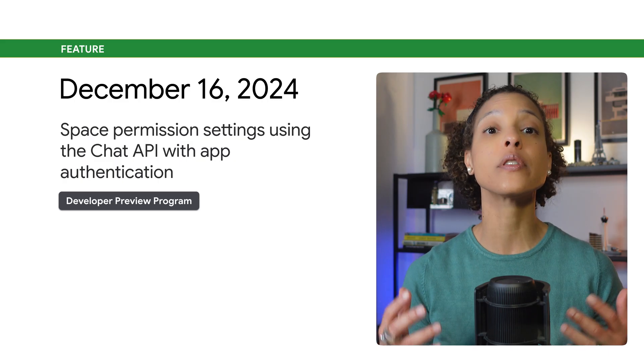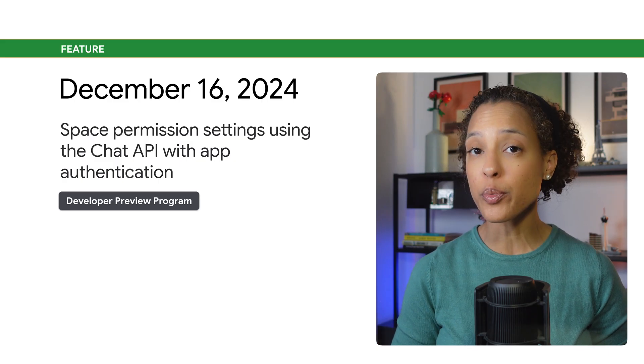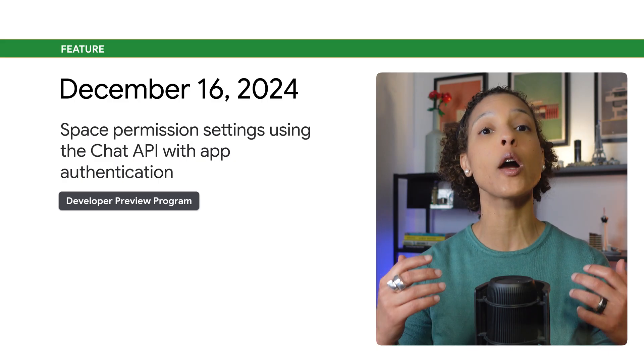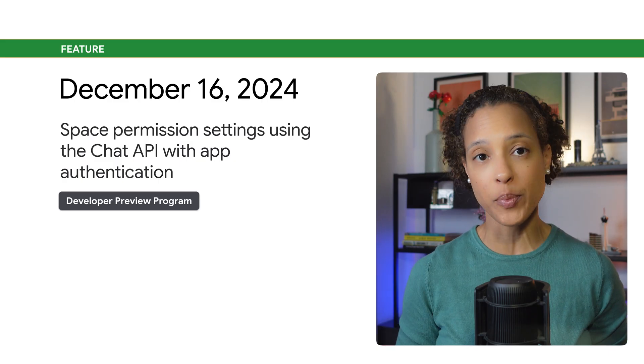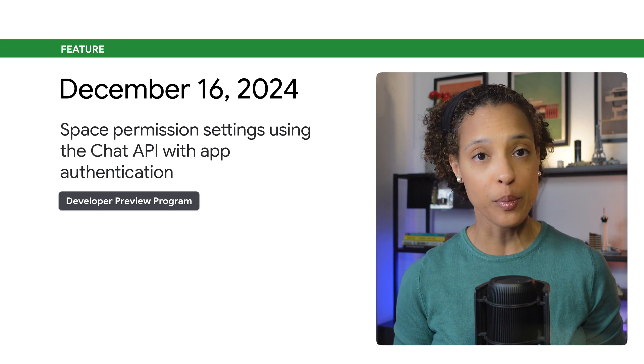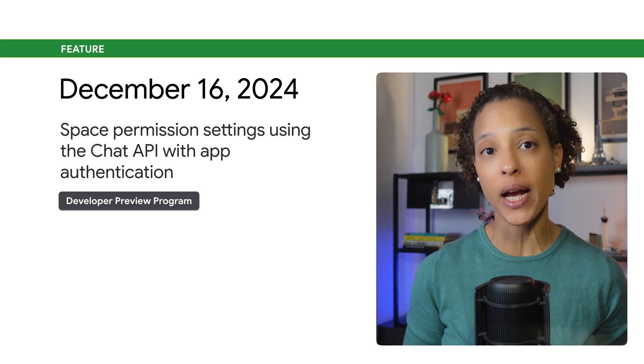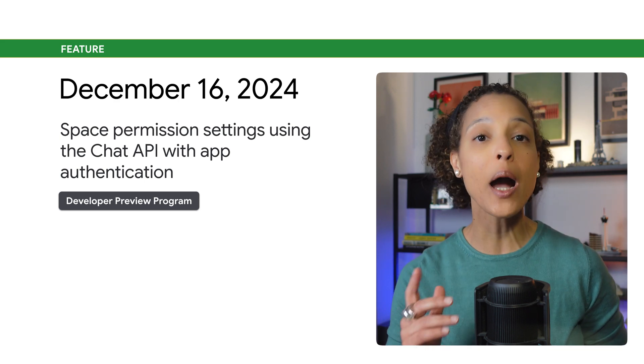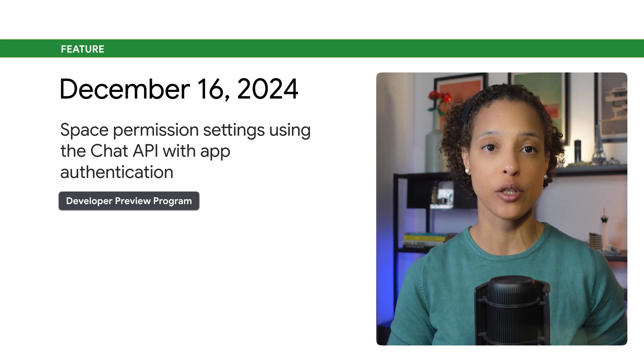Available through the developer preview program, you can now create announcement spaces and update space permission settings using the Chat API with app authentication. This enables chat apps to create announcement spaces and read and update space permissions.